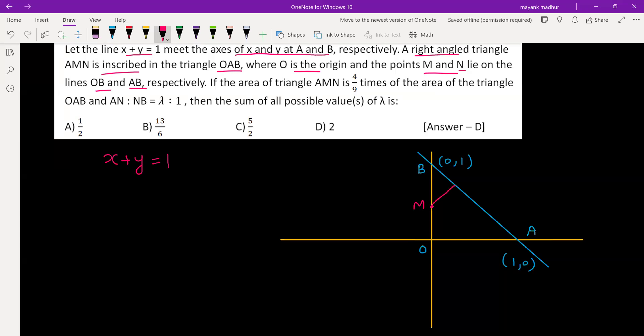This is right angle triangle AMN. Then it is given that AN is to NB as lambda is to 1. So BN is to AN is 1 to lambda. Using section formula, we can find N's coordinate. It will be 1 by lambda plus 1, and y coordinate will be lambda by lambda plus 1.